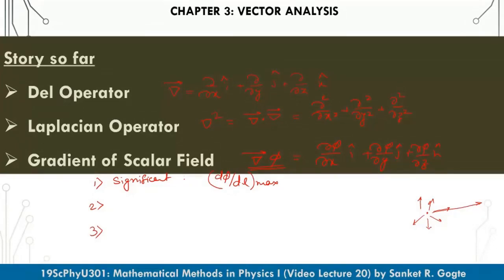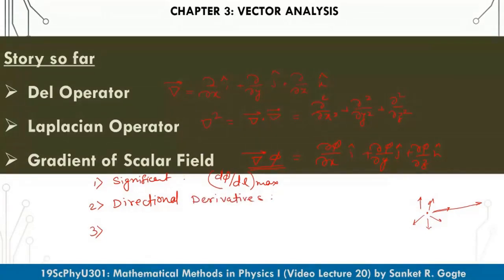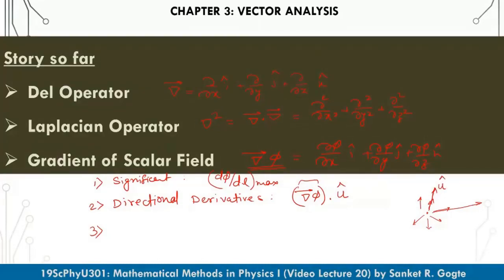The second concept we studied was directional derivatives. Mathematically, it is calculated as del phi dot product with a unit vector u. The physical meaning is: if u points in a particular direction, this directional derivative gives d-phi/dl — the rate with which the scalar field changes per unit length along that particular direction in which the unit vector u is pointing.